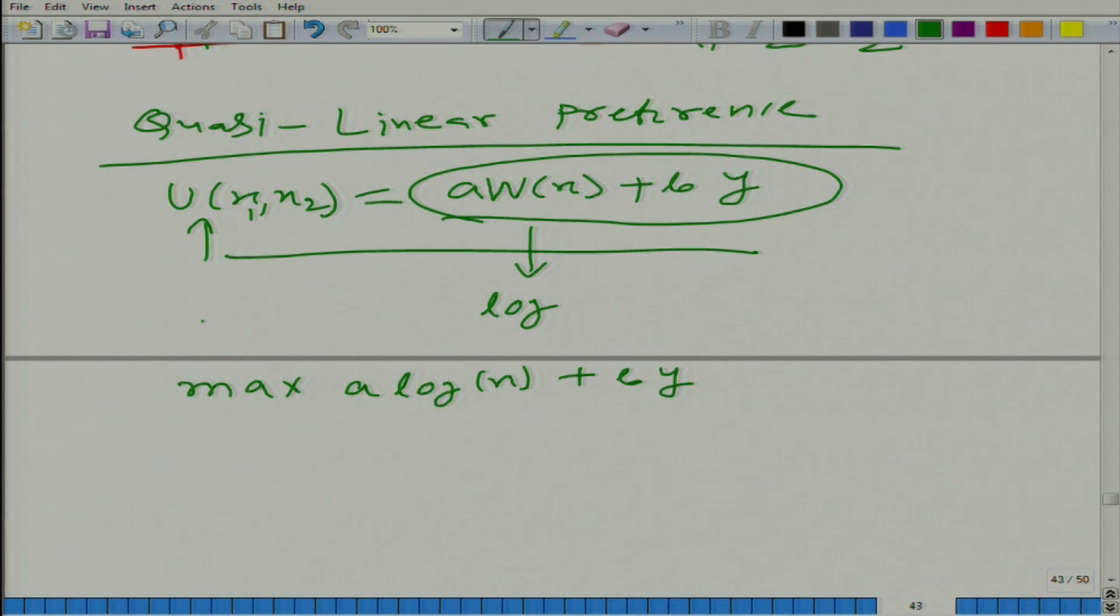And what is this particular form? It is linear in y and also this is additively separable in x and y, that x and y are not appearing in a multiplicative term, they are additively separable. Then the preference is called quasi-linear preference. Fine, is it clear?